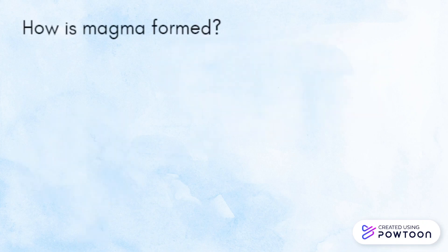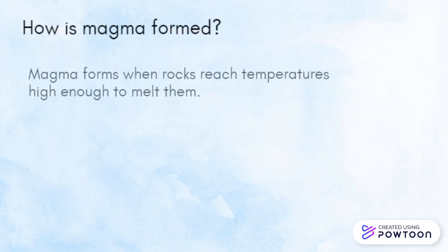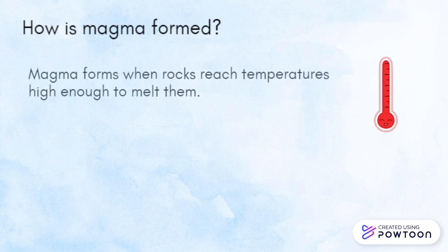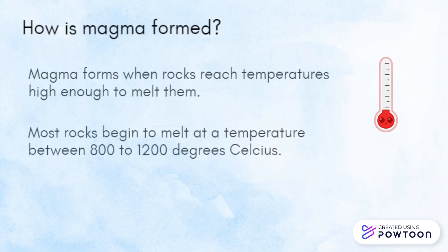How is magma formed? Magma forms when rocks reach temperatures high enough to melt them. Most rocks begin to melt at temperatures between 800 to 1,200 degrees Celsius.